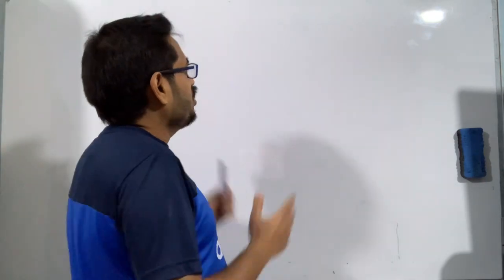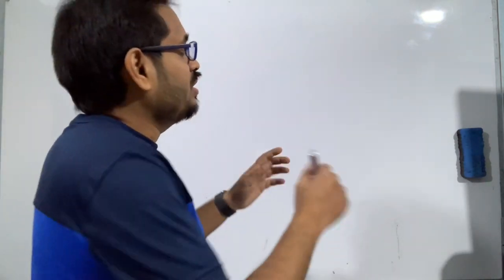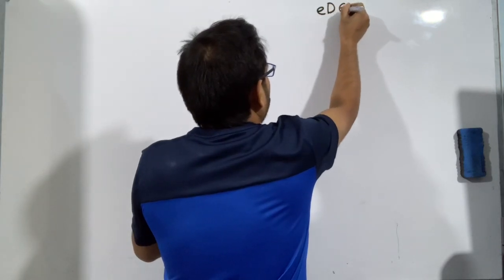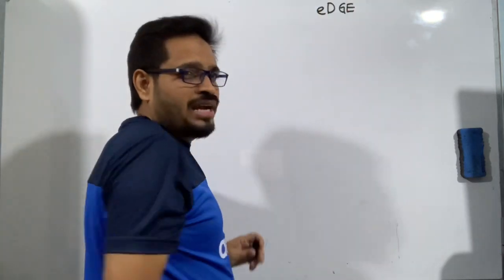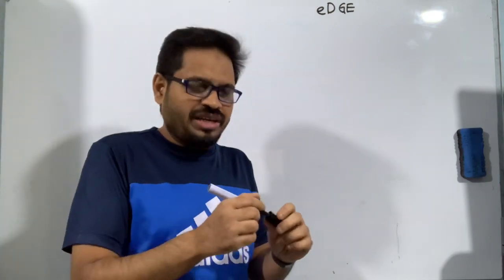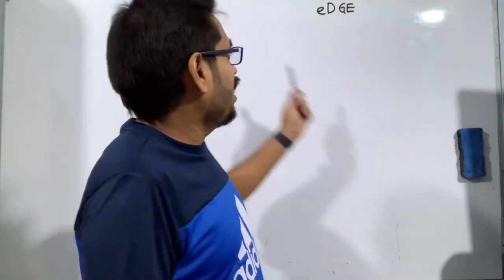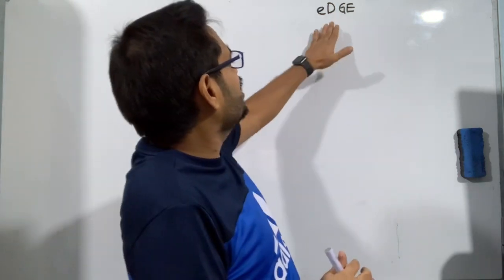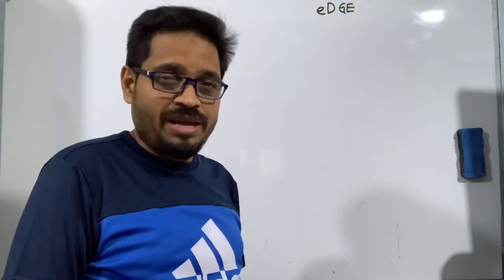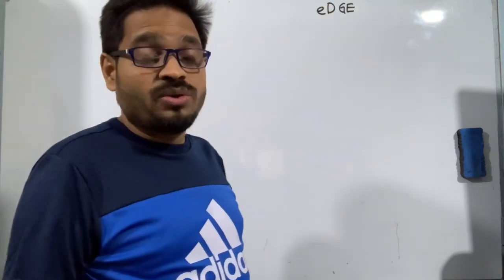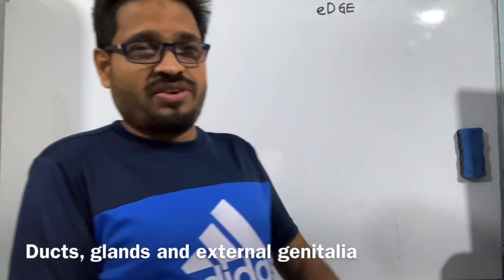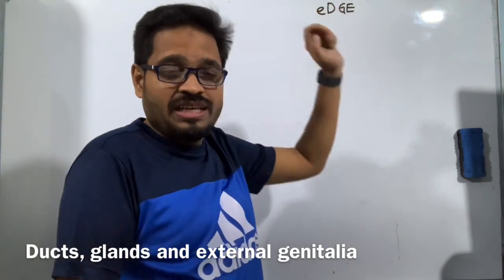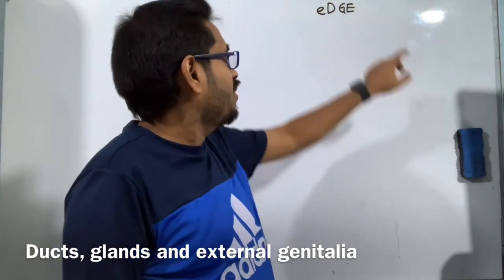To remember those, we can use a small word. I have written at the edge of the board — DGE. The three major parts of the reproductive system in male include the duct system for D, the gland system for G, and external genitalia for E.